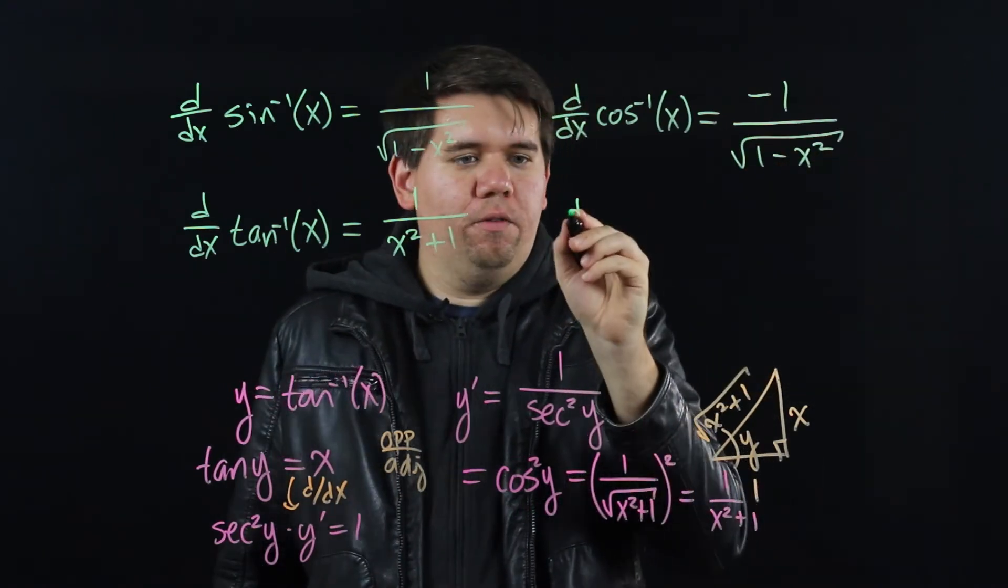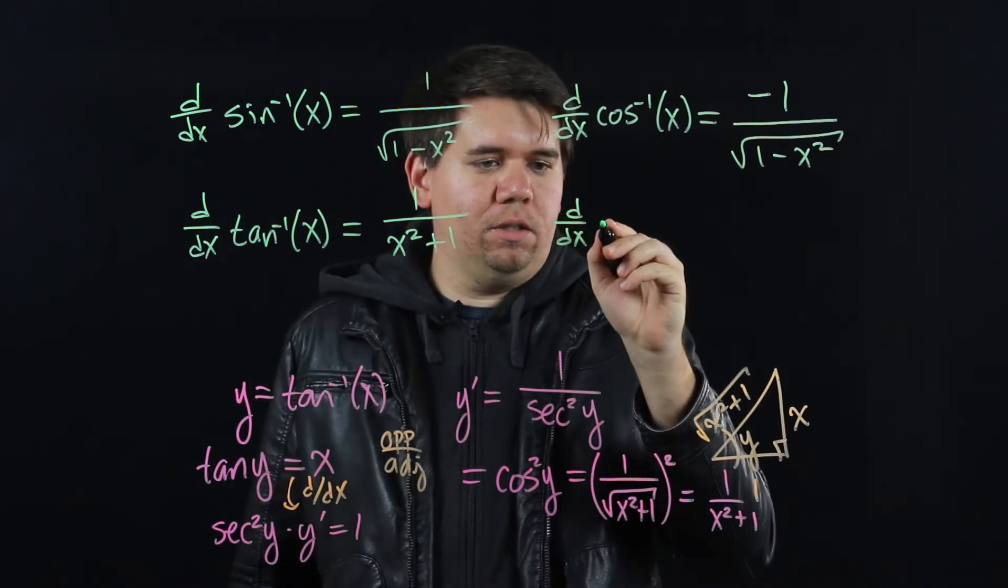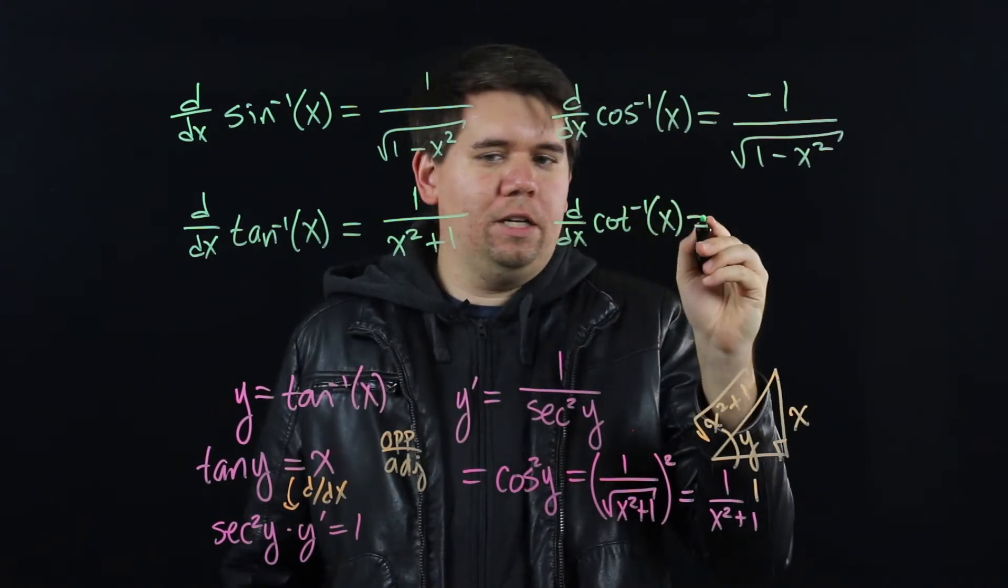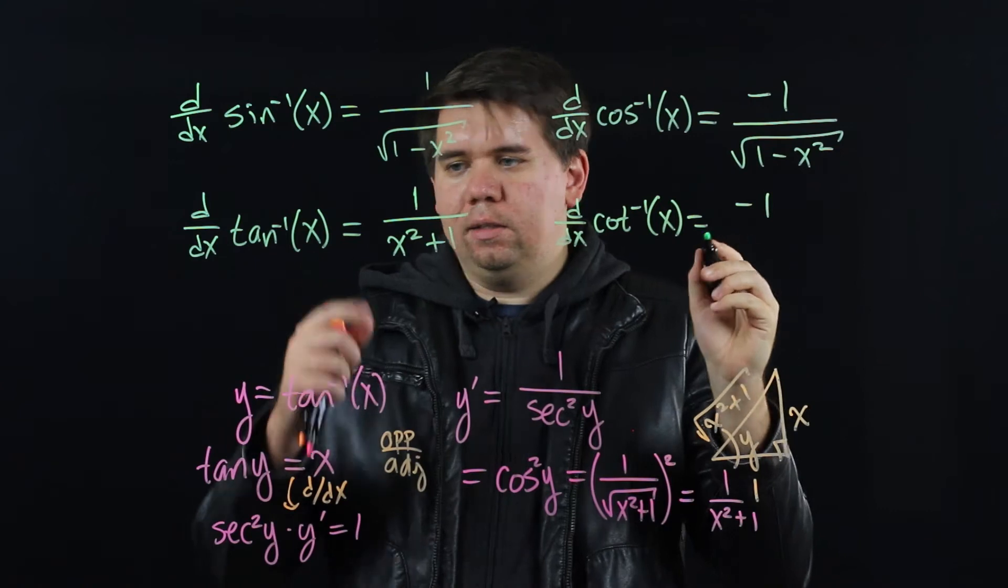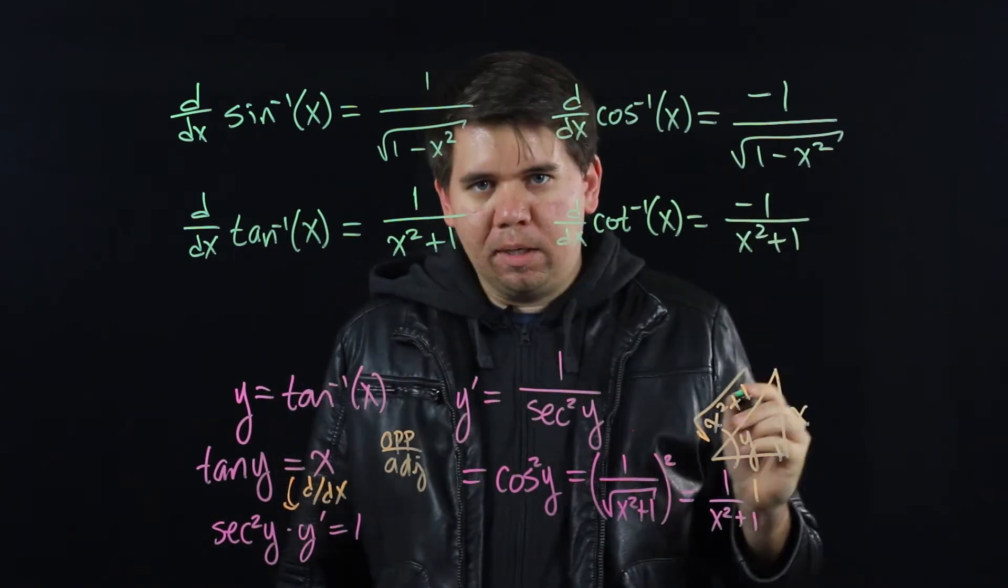The derivative for cotangent is very much the same as what it is for tangent inverse. The derivative of cotangent inverse or arc cotangent just comes out to be negative what it is for tangent. Negative 1 over x squared plus 1.